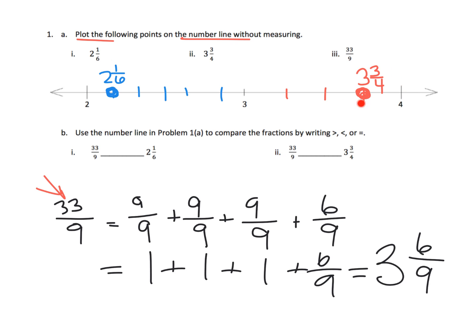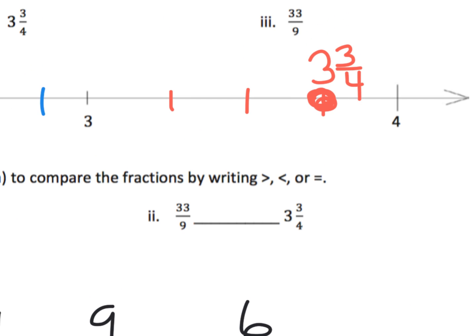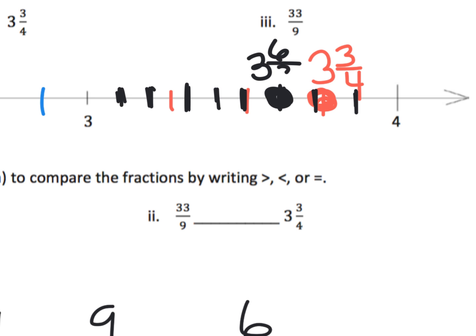Three and six-ninths lives in the neighborhood between three and four. To plot it, I'll cut from three to four into three pieces and then cut each of those into three equal pieces, giving nine total. Counting along: one ninth, two ninths, three ninths, four ninths, five ninths, six ninths — right here. There is three and six-ninths.